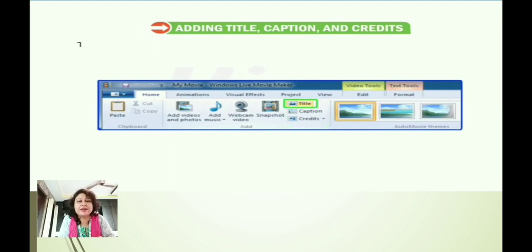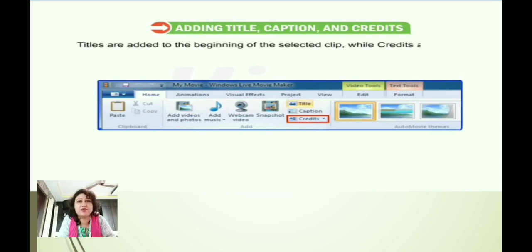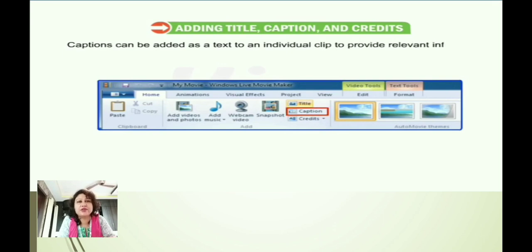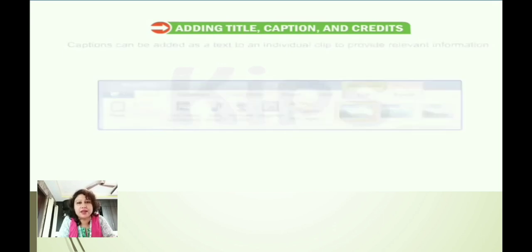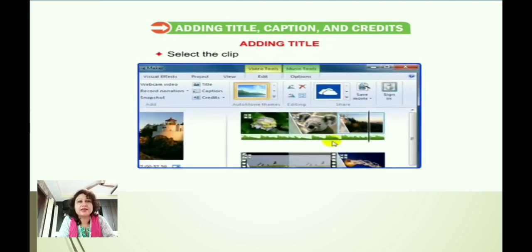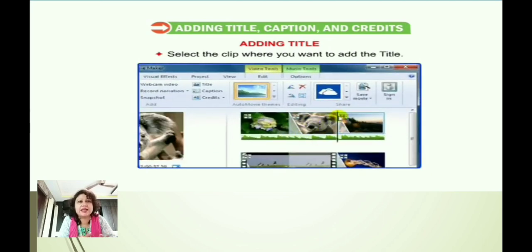Titles, captions, and credits are used to add text-based information in a movie. Titles are added at the beginning of the selected clip, credits are added at the last, and captions can be added as text to an individual clip to provide relevant information.